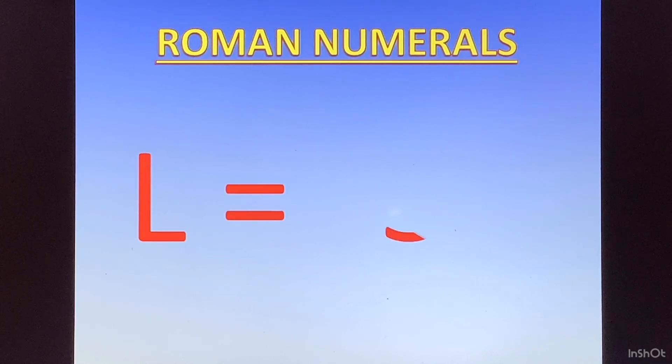L is 50. This you will have to learn. Then next is C. You remember the centuries that Sachin used to make. Century means a hundred. C stands for hundred.